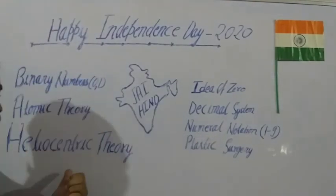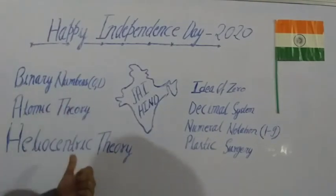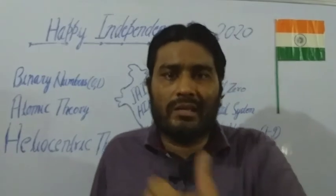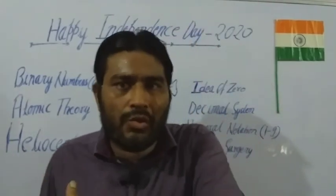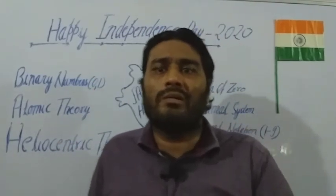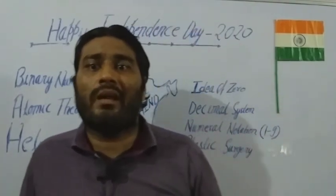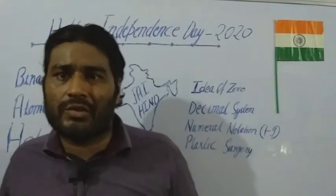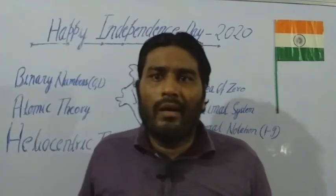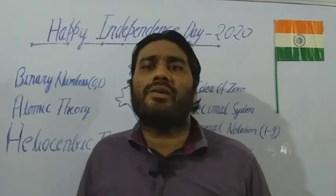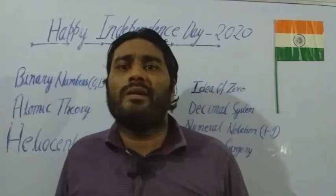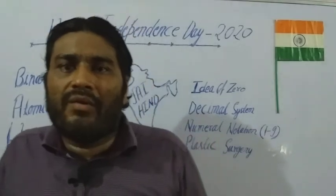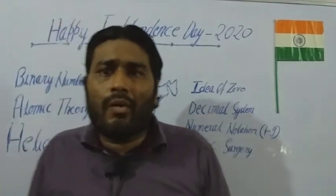Let's come to heliocentric theory. The man behind this theory was the great Aryabhata. He stated that Earth is round and it rotates on its own axis and revolves around the Sun.